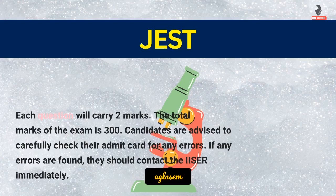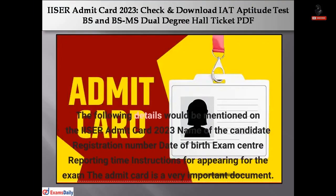Candidates are advised to carefully check their admit card for any errors. If any errors are found, they should contact the ISA immediately. The following details will be mentioned on the ISA admit card 2023: name of the candidate, registration number, date of birth, exam center, reporting time, and instructions for appearing for the exam.